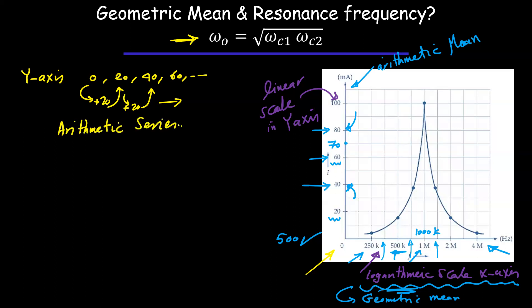And for arithmetic series we use arithmetic mean. Like 0 plus 40 divided by 2 will give you 20, which is a point between 0 and the 40. 20 plus 60 over 2 will give you 80 over 2, which is 40, and so on.